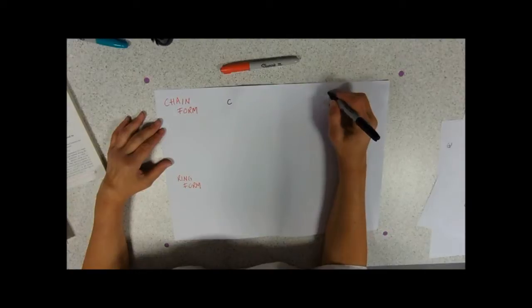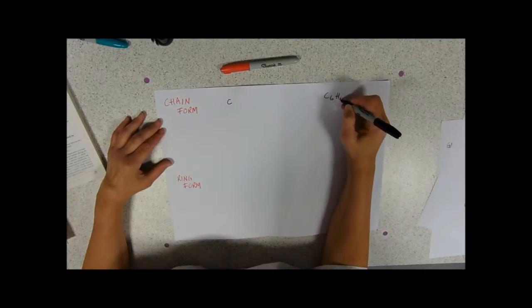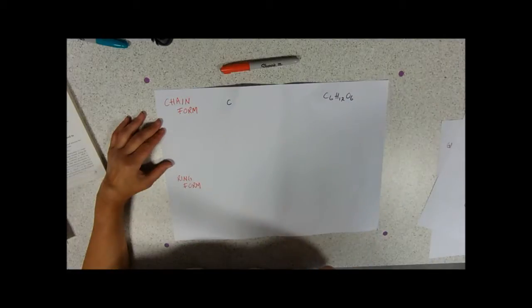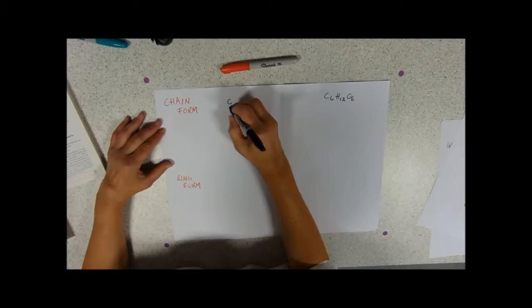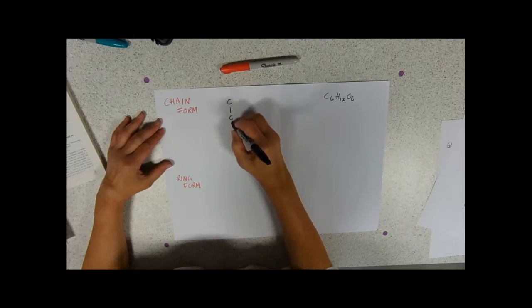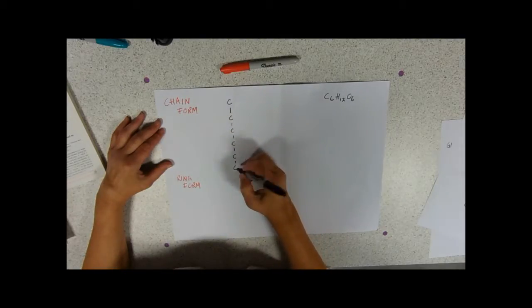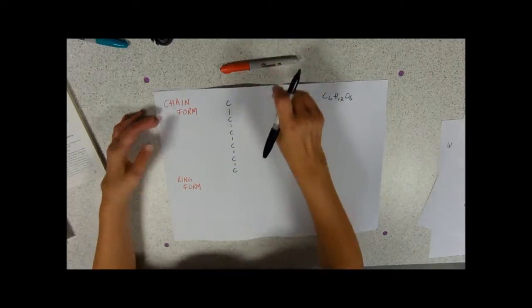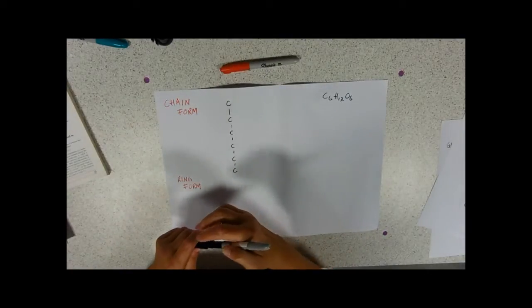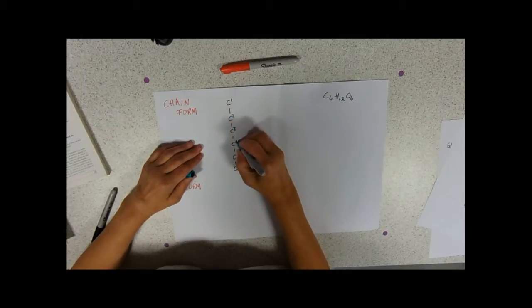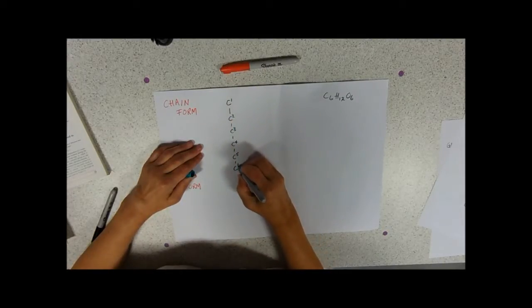You know from GCSE, glucose has the formula C6H12O6. So it has six carbons in a chain - one, two, three, four, five, six. And they are generally numbered from top to bottom: carbon one, two, three, four, five and six.